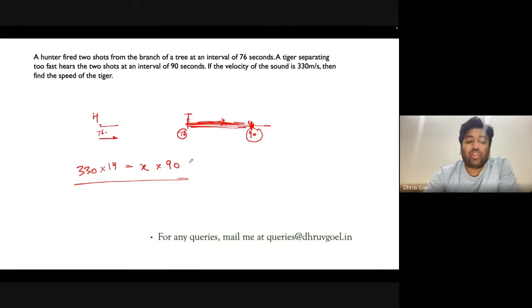If I solve this, we have 330 divided by 90 equals x divided by 14, which gives us 11 times 14 equals 154 divided by 3, which equals x. The answer comes to 51.33 meters per second. That is the speed of the tiger.